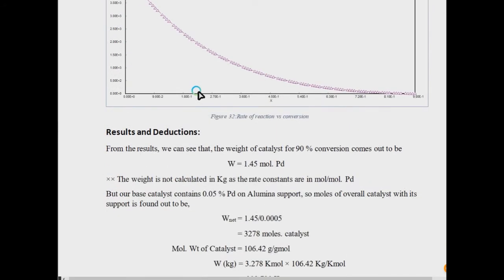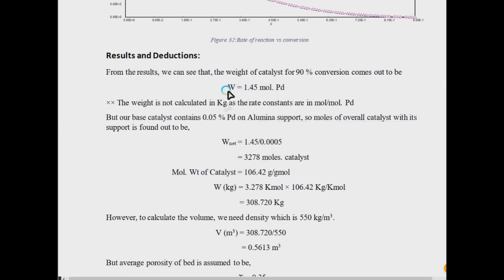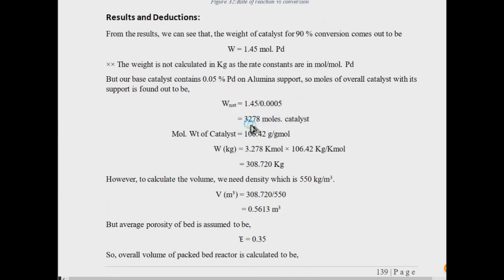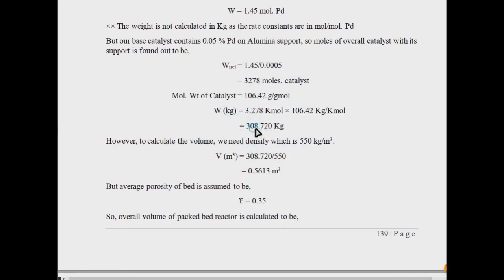The results are shown when you get the weight of catalyst. Like I have 0.05 percent palladium, you have to convert that into the real amount of catalyst. This 1.45 moles is representing 0.05 percent of the total catalyst; the rest is the support surface. So the original will be 3278 moles catalyst. We have the molar weight and we can calculate the weight in kilogram which comes out to be 308.72 kilogram.